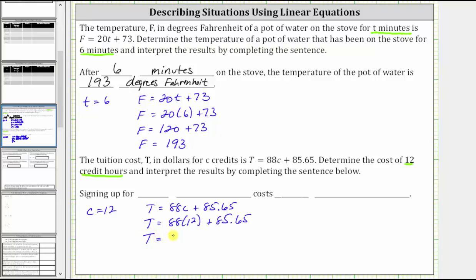is 1056 plus 85.65. 1056 plus 85.65 equals 1141.65.